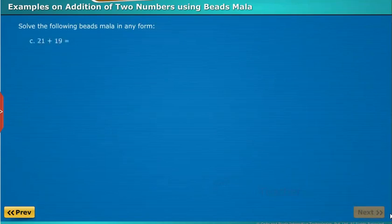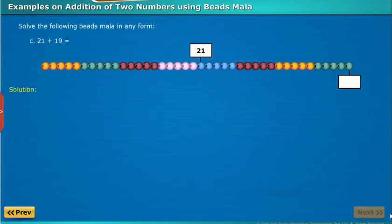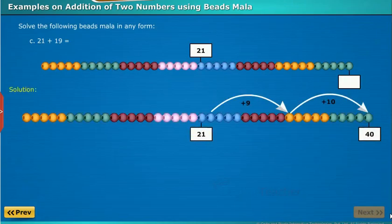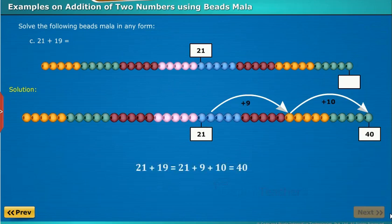Solve 21 plus 19. Here, first we have to count the beads up to the number 21. From the number 19, count the remaining beads in the form of 10s and 1s. So, we get 9 ones and 1 ten. After counting all the beads, let us now add them. The result is 40.